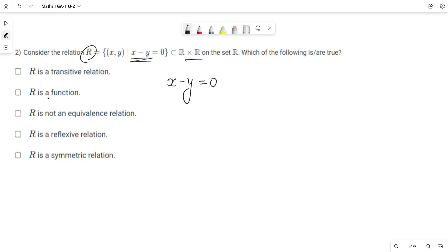First, let's check if this relation is reflexive. For a reflexive relation, we need to check if (x, x) satisfies the relation. This means we take the y value as x. Substituting into the equation: x - x = 0.